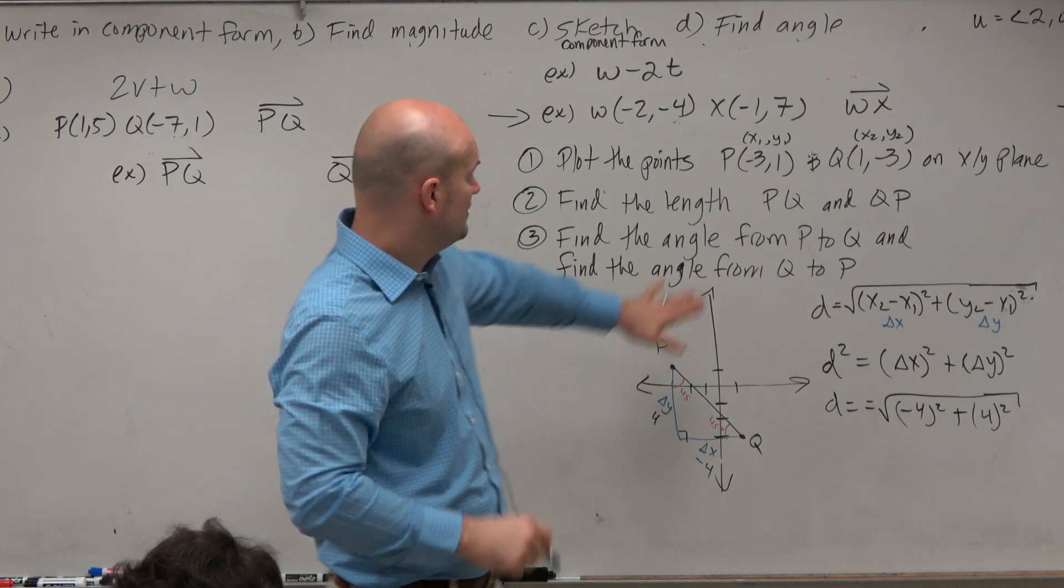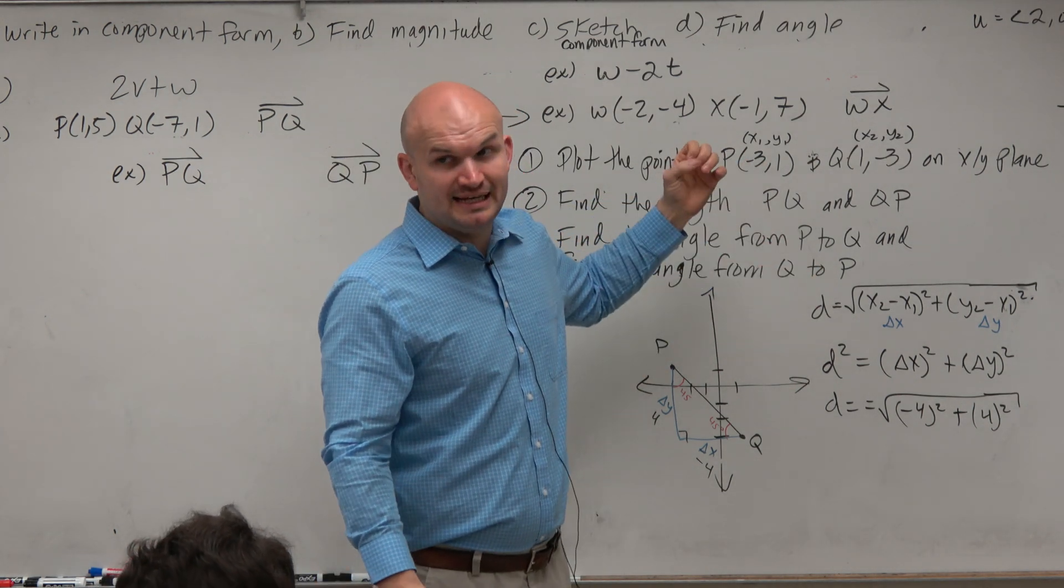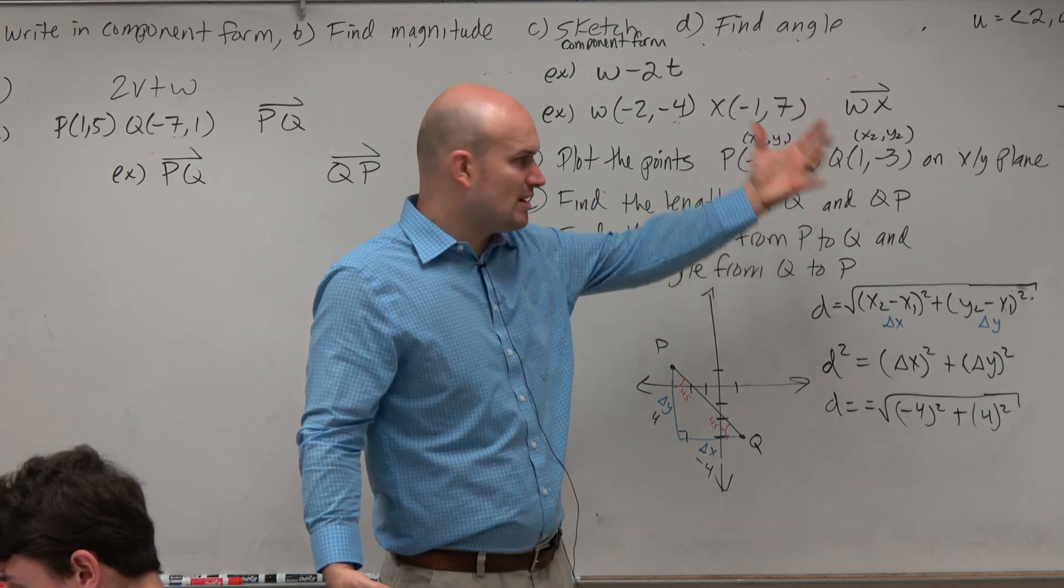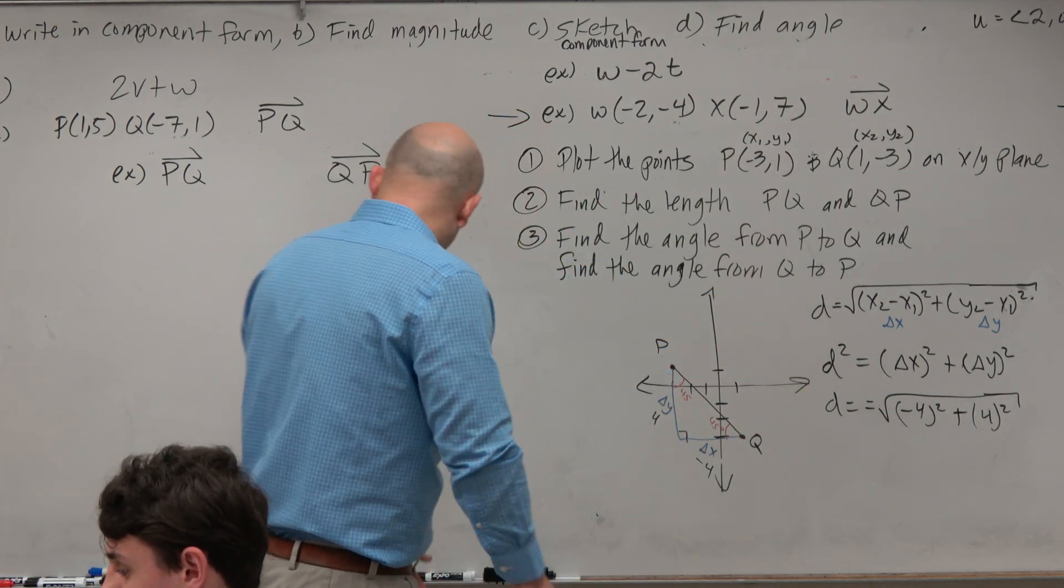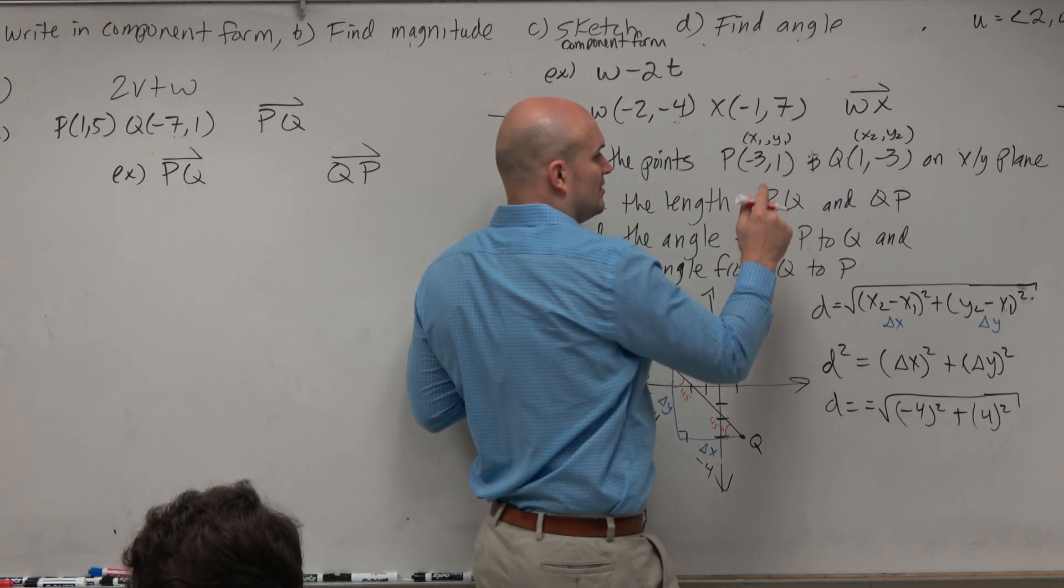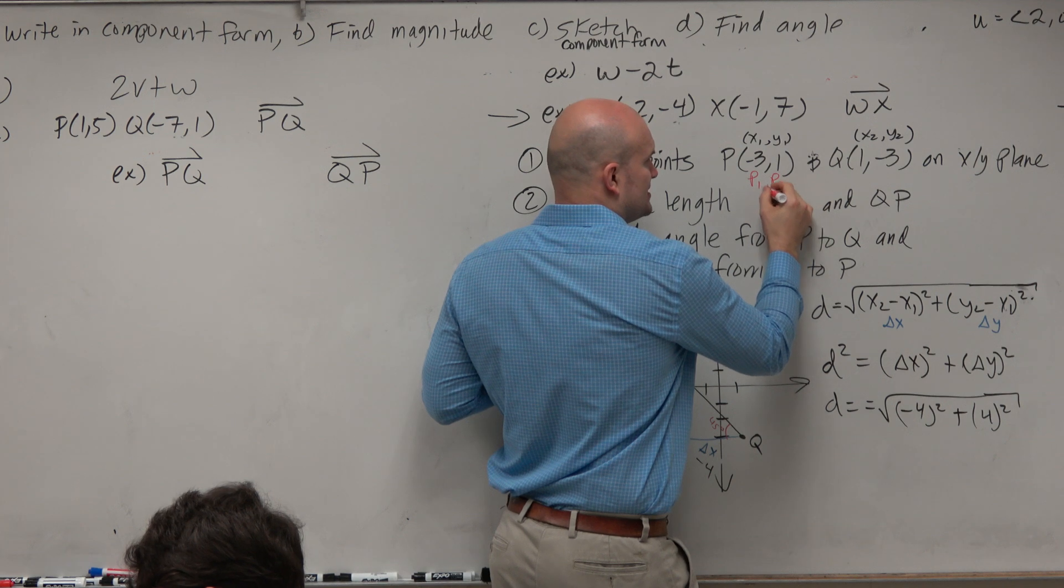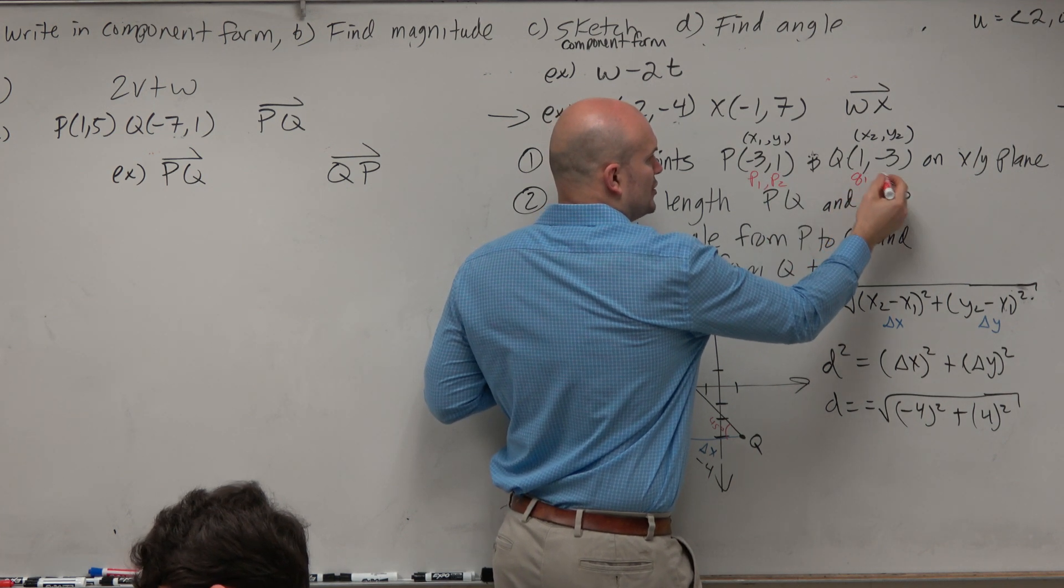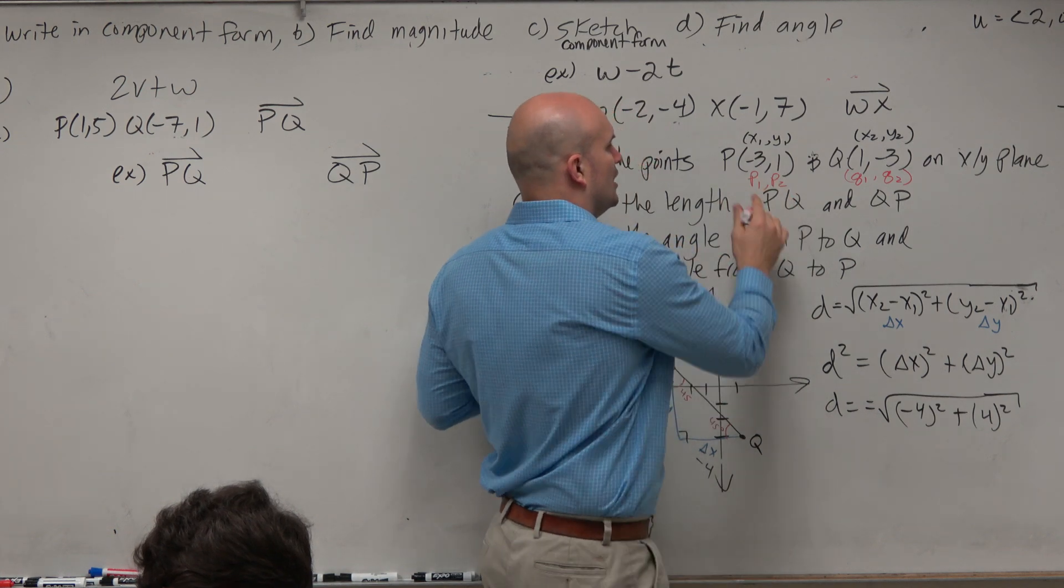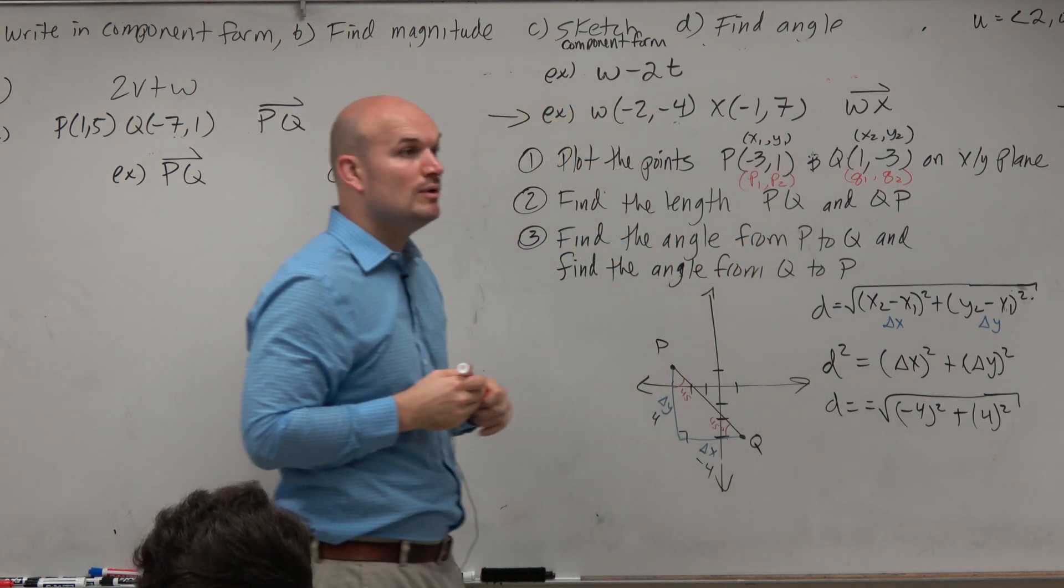Now, I showed you for understanding the distance formula, a lot of times we use x1, y1 to represent coordinate points. Here, as I noted in my notes, we can also label them as P1, P2, and this would be Q1, Q2. Those are the components of your P and your Q as your points.